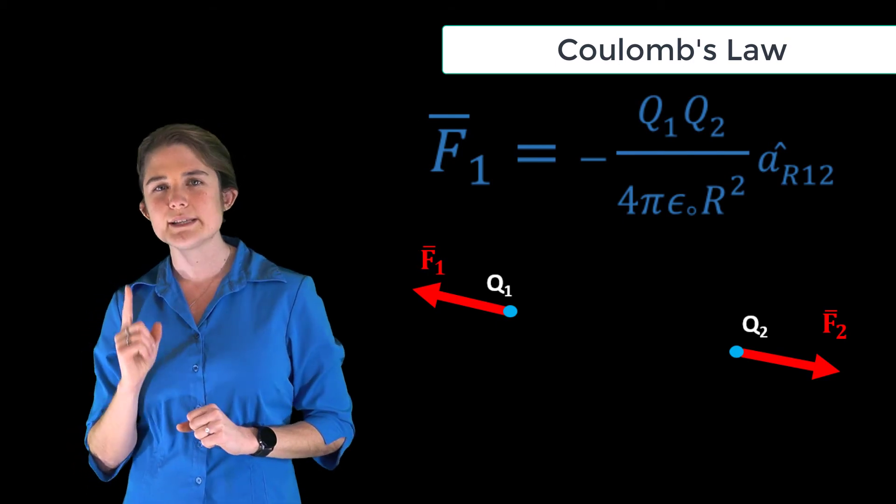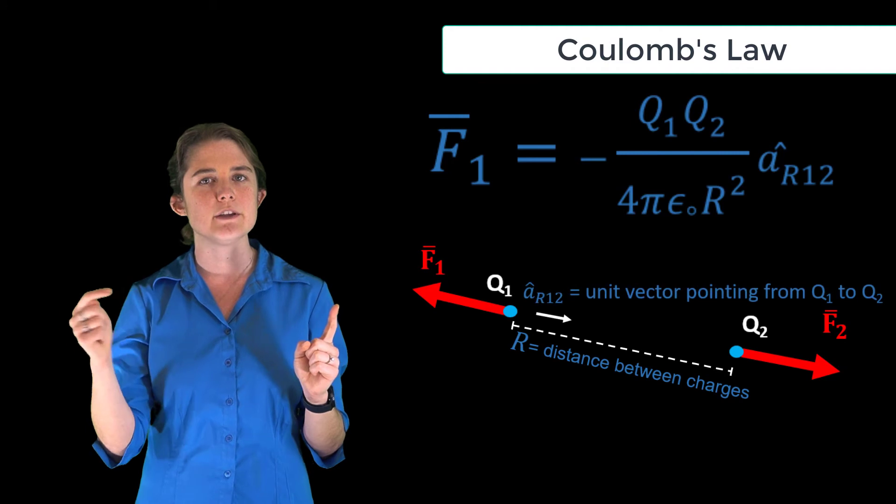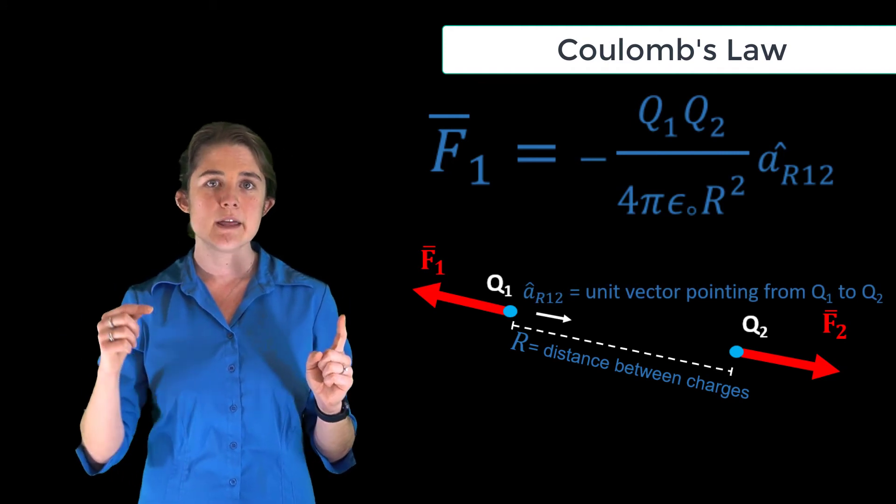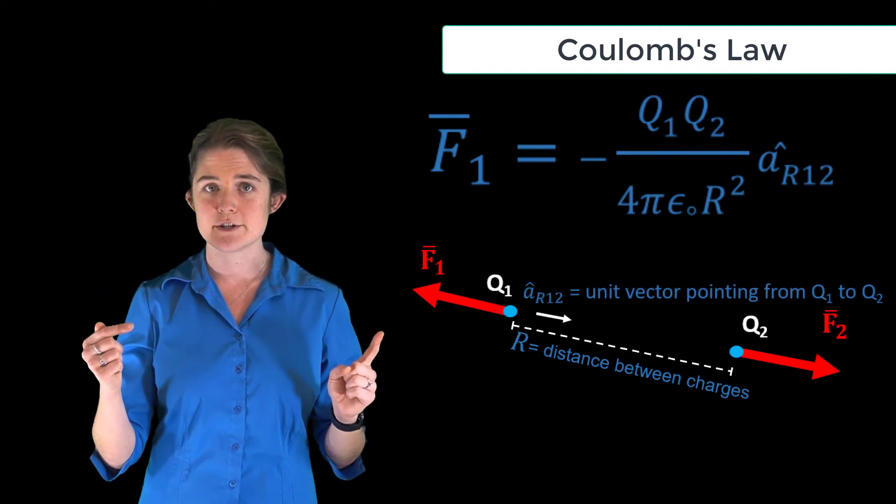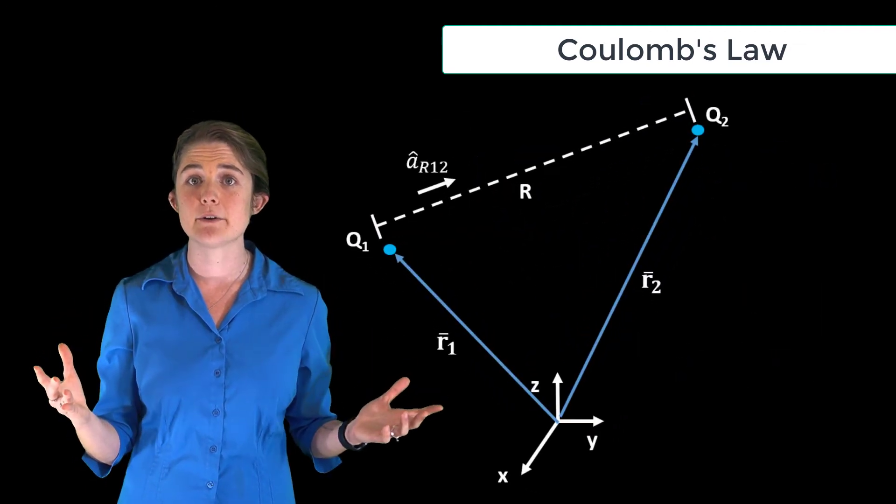The unit vector ar12 points from charge 1 to charge 2. For the general case of two point charges randomly located in space, we can find both the separation and the appropriate unit vector using the two position vectors r1 and r2.